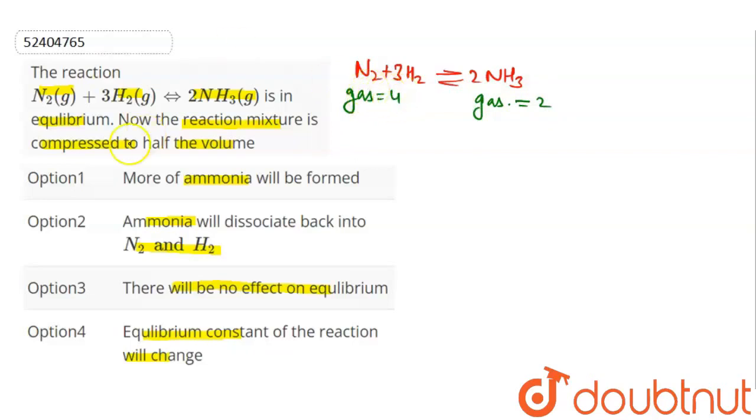On decreasing volume, the reaction will go in the direction where gaseous moles are less. Here gaseous moles are less on the product side.